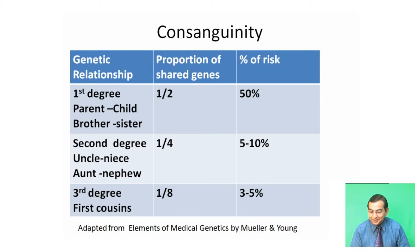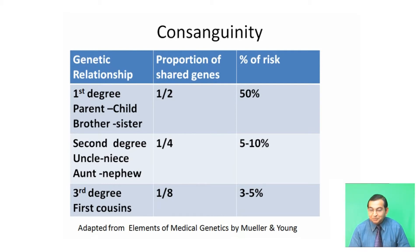First degree genetic relationship means parent-child or brother-sister. So if a parent-child or brother-sister marriage occurs, there is a 50% risk of appearance of recessive characters.